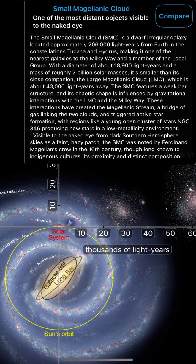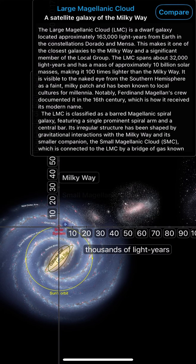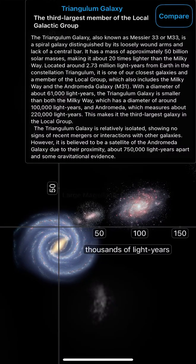Small Magellanic Cloud, one of the most distant objects visible to the naked eye. Large Magellanic Cloud, a satellite galaxy of the Milky Way. Triangulum galaxy, the third largest member of the local galactic group.